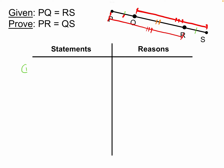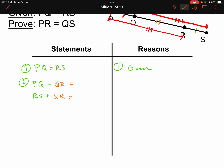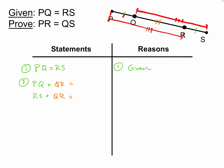Start off with our givens, just like anything else: PQ equals RS. That's our given. Now I'm going to add those together. PQ plus QR gives me PR, and RS plus QR gives me QS. What allows me to do that is the segment addition postulate.